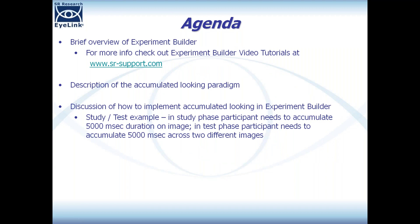I'll give a brief crash course, then we'll talk about what the accumulated looking paradigm is. We'll discuss how to implement it in Experiment Builder with an example that does a study-test paradigm. In the study phase, the participant needs to accumulate five seconds of gaze on the study image. In the test phase, the participant sees two images and needs to accumulate 5000 milliseconds of gaze across both images.